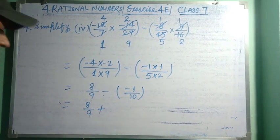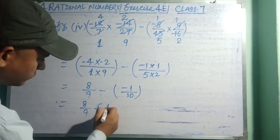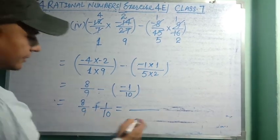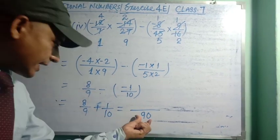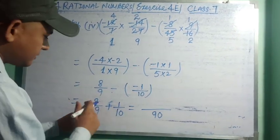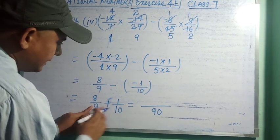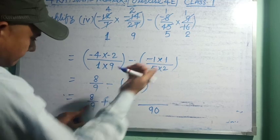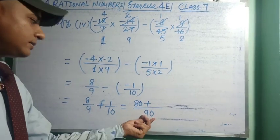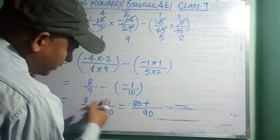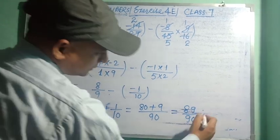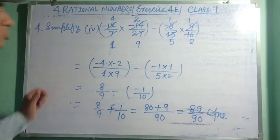We get minus 1/10 and 8/9. Minus into minus is plus. Now take the LCM of 9 and 10, which is 90. Divide 90 by 9 to get 10, multiply by 8 to get 80. Divide 90 by 10 to get 9, multiply by 1 to get 9. So 80 + 9 = 89, giving 89/90 as the answer.